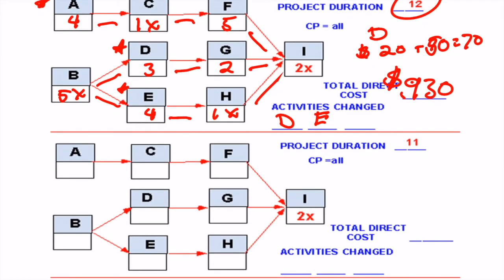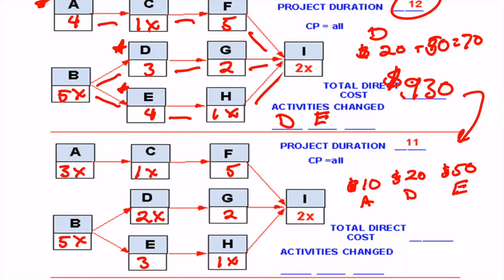So let's go ahead and do that. We now take this down to 3X. It can only be crashed once. 5X here, 1X here. We've now crashed D to the maximum amount. We've got an additional $10 for A, we've got an additional $20 for D, and we've got additional $50 for E. So if we add that up to what we had previously, our total direct cost this time is going to be $1,010 to get it to project duration 11.